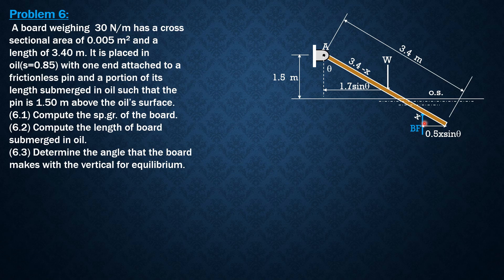Therefore, the moment arm of the buoyant force from A, horizontal distance, is because this is 3.4 sine theta, then 3.4 sine theta minus 0.5x sine theta. Or if we factor out sine theta, that's quantity 3.4 minus 0.5x of sine theta. That is ready for the analysis later.